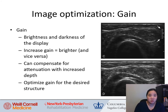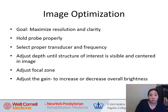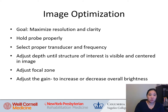Gain controls the brightness and darkness of the display. Increasing gain makes things brighter and vice versa. It can help compensate for attenuation with increased depth. You want to optimize the gain for the desired structure. Overall, the goal is to maximize resolution and clarity — hold the probe properly, select the proper transducer and frequency, adjust depth so the structure of interest is centered, adjust focal zone, and adjust the gain.